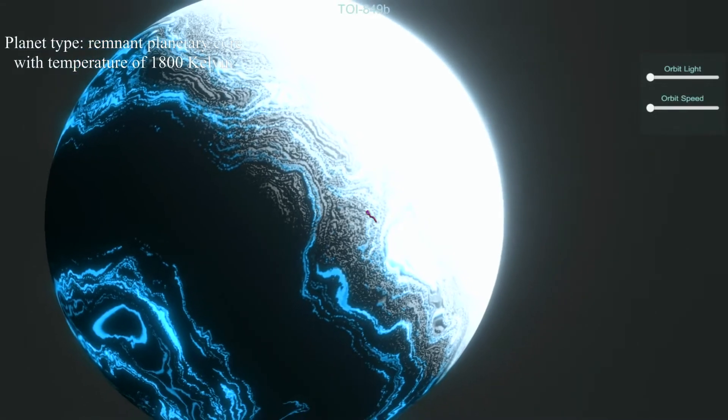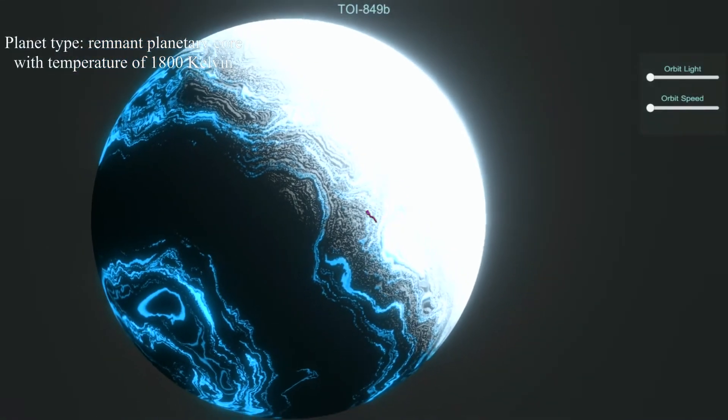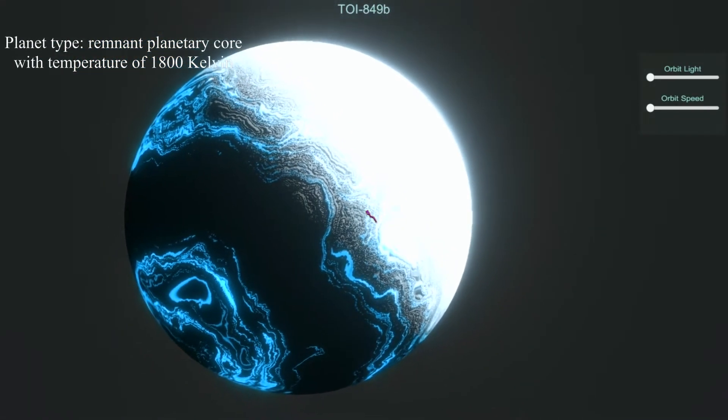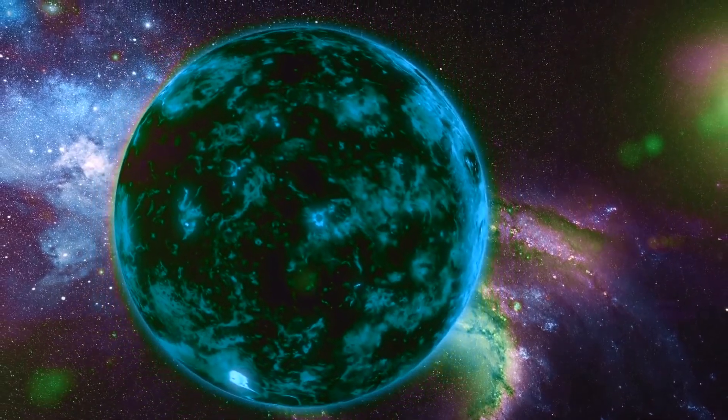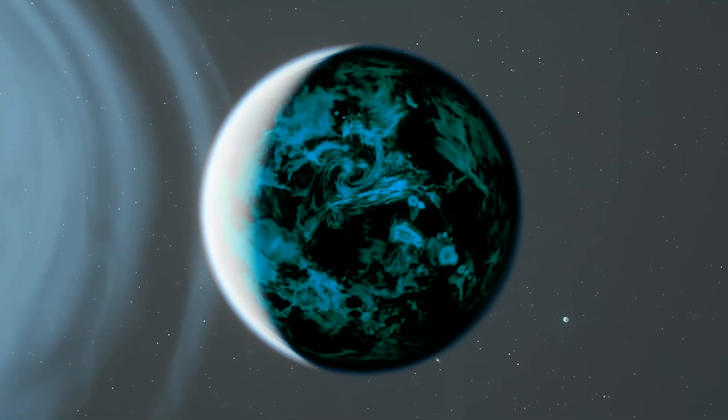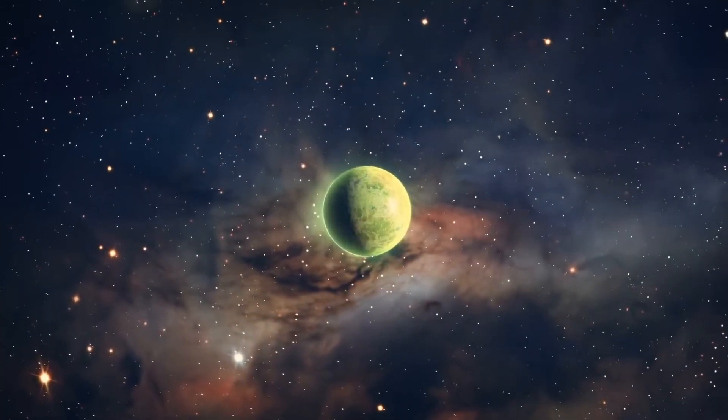However, its mass is 40 times that of Earth, suggesting a density much higher than a typical gas giant. The probable explanation is that TOI 849b is an abnormally large, rocky planet. This would be the most massive rocky planet ever discovered.